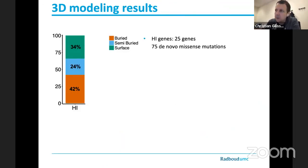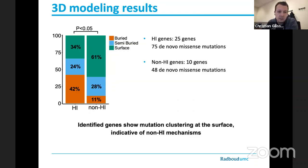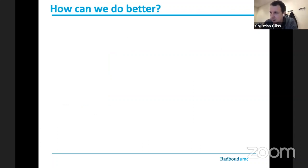We categorized all mutations into three categories — buried, semi-buried, or surface — and looked at 25 haploinsufficient genes and 75 de novo mutations. Roughly one-third of mutations occur at the surface and two-thirds are buried or semi-buried. Looking at our 10 identified genes where we believe the mechanism is not haploinsufficiency, the distribution is markedly different: almost two-thirds of mutations actually occur at the surface of the protein. This difference is statistically significant, confirming that by identifying genes based on clustering of mutations, we're identifying genes that do not act through haploinsufficiency. Many of these genes have since been confirmed in separate studies to be involved in neurodevelopmental disorders.